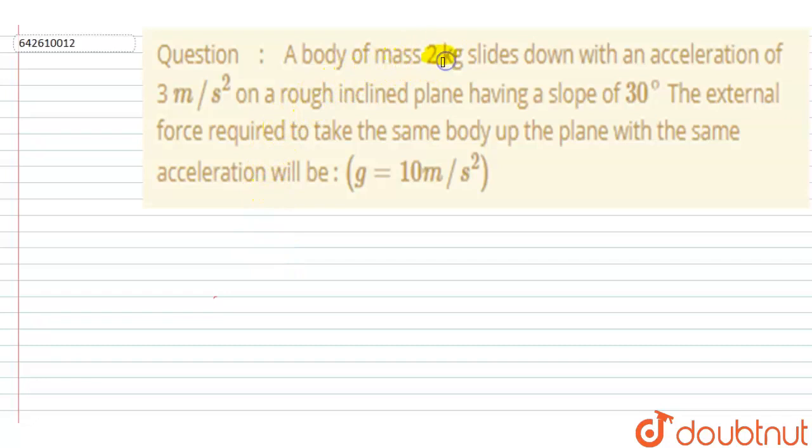A block of mass 2 kg slides down with an acceleration of 3 m/s² on a rough inclined plane having an inclination of 30°. The external force required to take the body up the plane with the same acceleration will be? So let's draw the diagram first.